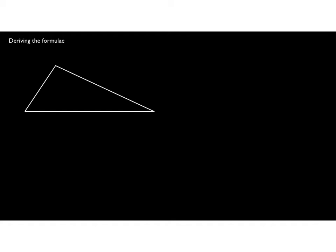Let's start with a triangle, labelling the vertices A, B, and C. From point C we drop a perpendicular to the base, creating a 90-degree angle, and label point D where this perpendicular meets line AB. We label side BC as lowercase a, side AC as lowercase b, and the angles theta and phi. The distance from C down to D is X.